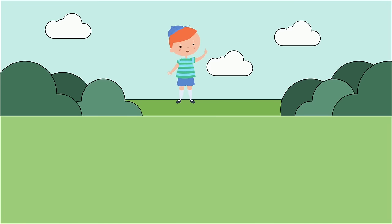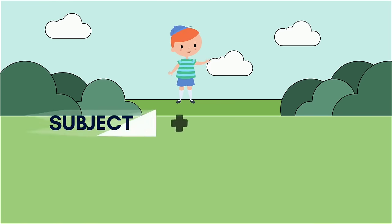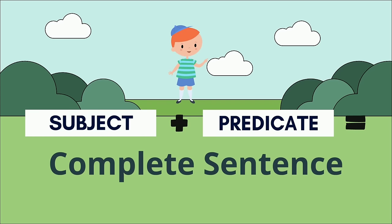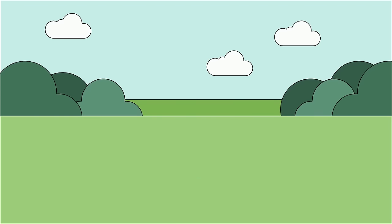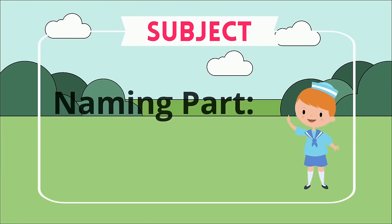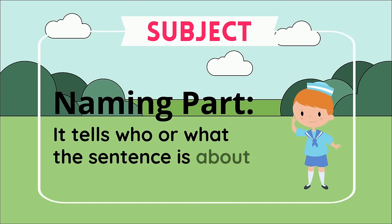Let's learn a little more about how a subject and predicate make a complete sentence. The first part is the subject. This is the naming part. The subject tells who or what the sentence is about.